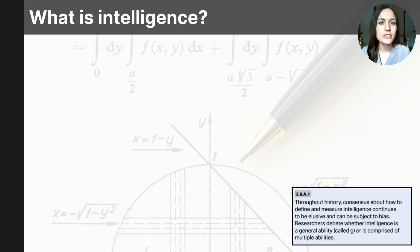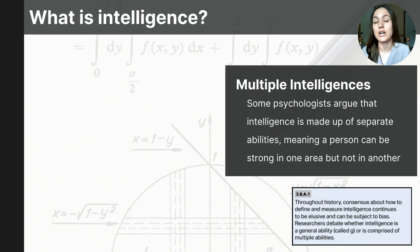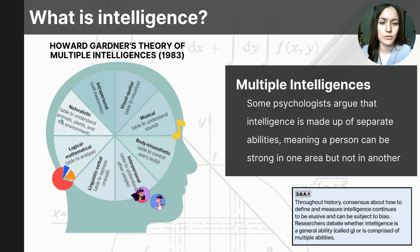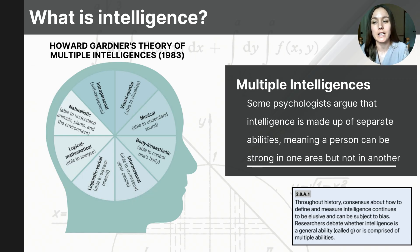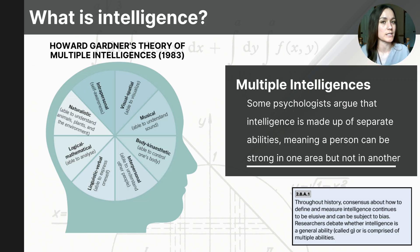Since the mid-1980s, psychologists have expanded the definition of intelligence beyond just academic abilities. Howard Gardner and Robert Sternberg are key figures in this shift. In 1983, Howard Gardner introduced the theory of multiple intelligences, proposing eight distinct types of intelligence — musical, interpersonal, and logical-mathematical were just a few, and you can see them represented in the diagram on the left. His theory suggests that people can excel in one area without being strong in others. Cases like savant syndrome or brain damage were used to support this idea.